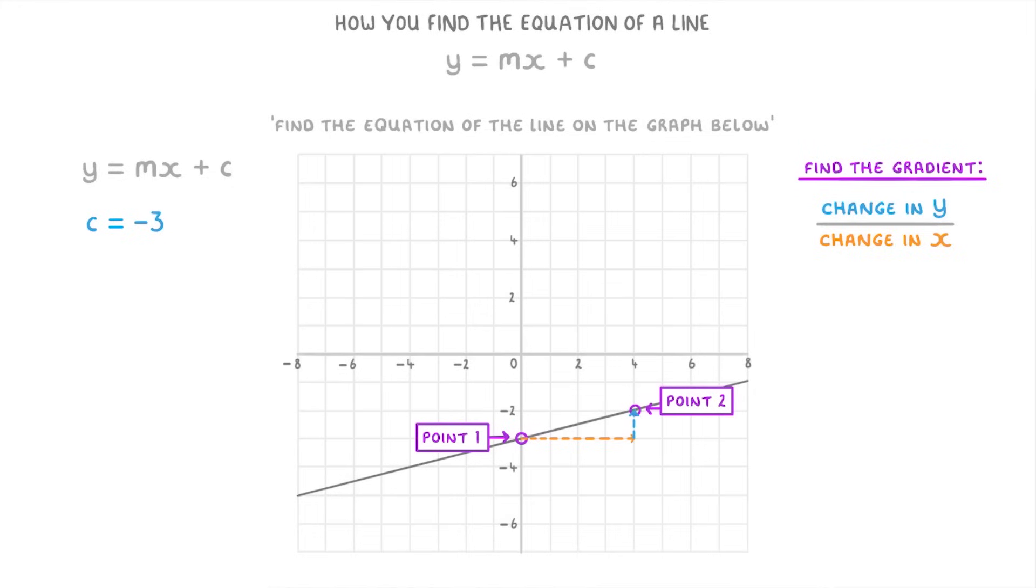So if we go from point 1 to point 2 and start with the y's, we can see that we've gone up by one, so our change in y is just one. And then if we look at the x values, we can see that we've gone along by four, so our change in x is four. This means that the gradient will be one divided by four, which can't be simplified, so m is just one quarter.